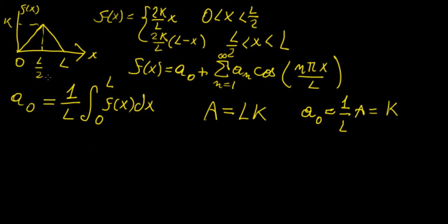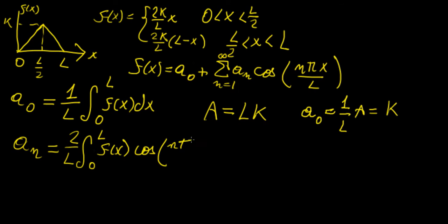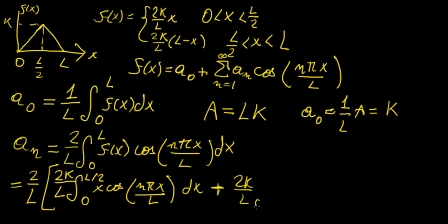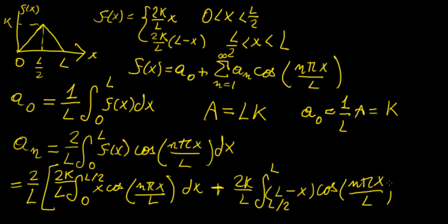Next we find aₙ, which equals 2/L times the integral from 0 to L of f(x) cosine(nπx/L) dx. We split this into two integrals: Integral 1 goes from 0 to L/2 with (2k/L)x cosine(nπx/L) dx, plus Integral 2 from L/2 to L with (2k/L)(L − x) cosine(nπx/L) dx.